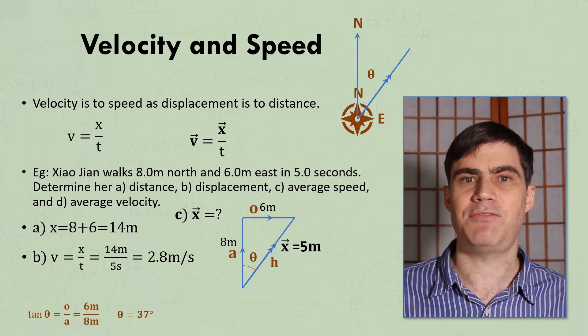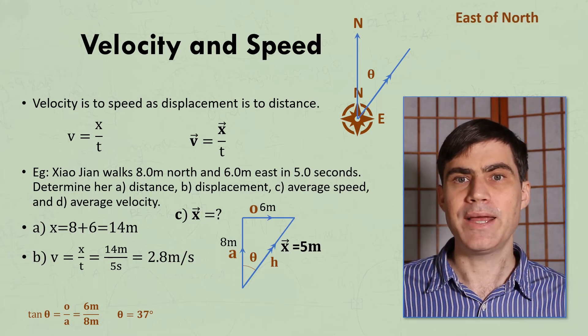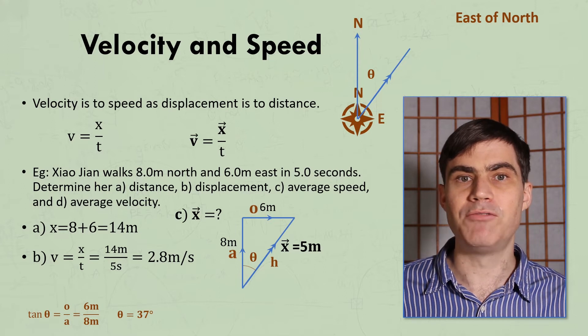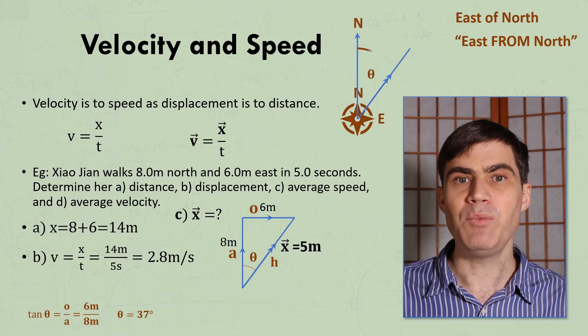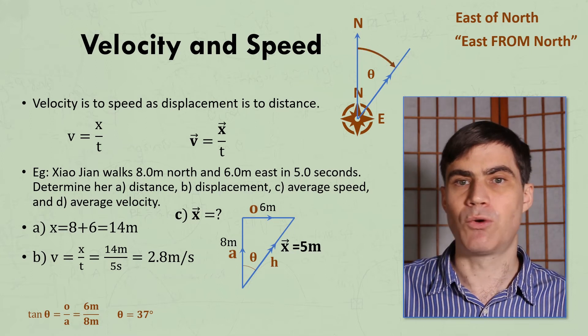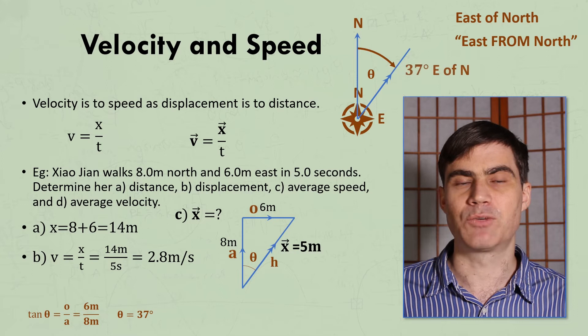So the answer is 37 degrees east of north. I encourage my students to think of east of north as actually being east from north. Because if we start with north, then we need to move 37 degrees towards the east to get the direction we calculated.